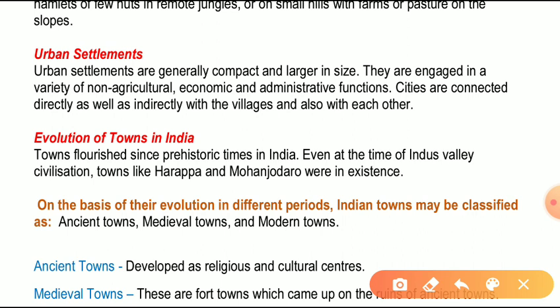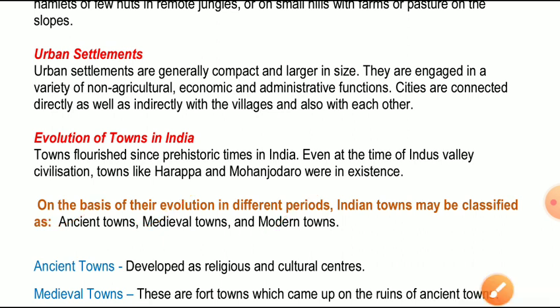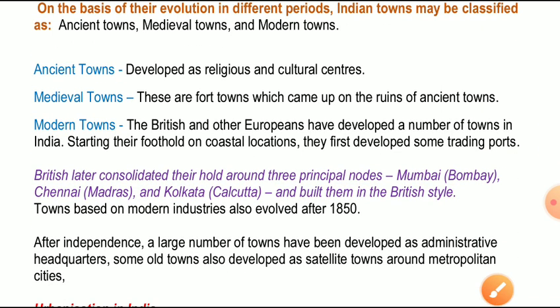इन शहरों का उद्भव कब हुआ, इसके आधार पर भारतीय शहरों को तीन भागों में बाँटा गया है। पहला है ancient town या प्राचीन शहर, दूसरा medieval town या मध्यकालीन शहर, और तीसरा modern towns या आधुनिक शहर। Ancient towns developed as religious and cultural centers - जैसे वाराणसी, मथुरा, काशी, वृंदावन - जो पुराने शहर हैं, ये basically धार्मिक और सांस्कृतिक केंद्रों के रूप में विकसित हुए थे।